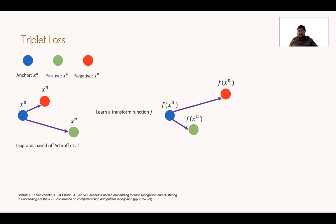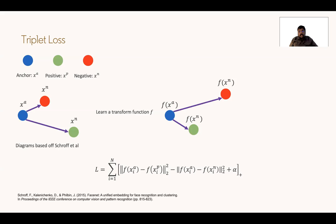Another popular paradigm, which we will revisit in video understanding, is triplet loss. Given three data points — an anchor, a positive, and a negative — the anchor and positive belong to the same class, but the anchor and negative do not. What we want to learn is that the distance between anchor and positive should be small, but the distance between anchor and negative should be higher than that between anchor and positive. This is reflected in the loss function: distance(anchor, positive) minus distance(anchor, negative) plus a hyperparameter alpha. If this is positive, the loss is non-zero and the network pushes negatives farther away. These triplets can be created for facial verification or practical tasks like product re-identification or e-commerce.